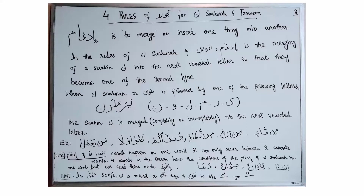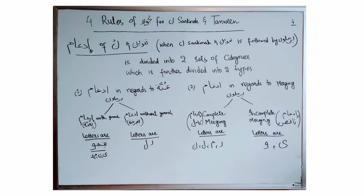In short, whenever Noon Sakina or Tanween is followed by Yermalun letters, we do Idgham — we merge Noon Sakina into the vowel letter coming after it — and Idgham cannot occur in one word. Idgham of Noon Sakina and Tanween can be divided into two sets of categories: the first is Idgham in regards to Gunna, and the second is Idgham in regards to Marjin (merging). The Gunna category is further divided into Idgham with Gunna and Idgham without Gunna.